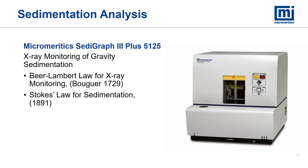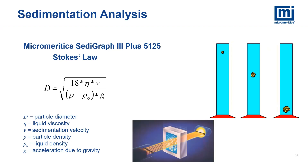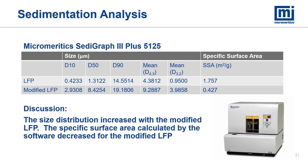The next technique is sedimentation analysis using the Micromeritics Sedigraph 3 Plus. This is used to determine a particle size distribution by incorporating Beer's Law and Stokes' Law. It is a widely accepted technique that continues to withstand the test of time. Stokes' Law states that if particles are of uniform density and the liquid viscosity and density are known, a particle size can be determined based on the sedimentation velocity — bigger particles settle faster than smaller particles. This technique also captures a powder's behavior in a slurry as well as giving particle size information. The results show that the modified LFP has larger particle sizes present than the LFP.